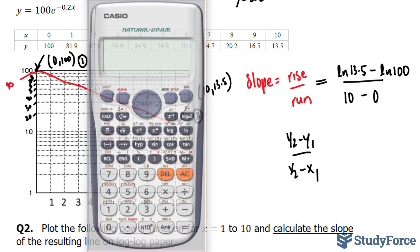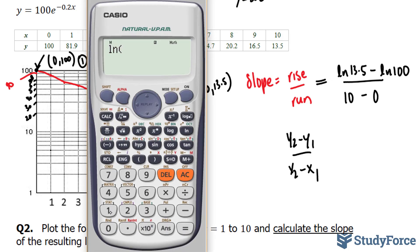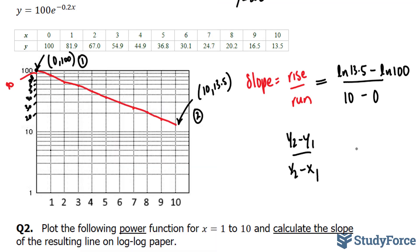Let's use our calculator to compute this. We have ln of 13.5 minus ln of 100. That gives us negative 2.0. And we're going to divide this number by 10 because 10 minus 0 is 10. Divide by 10 gives us negative 0.2. That right there is our rate.